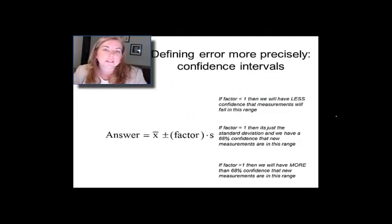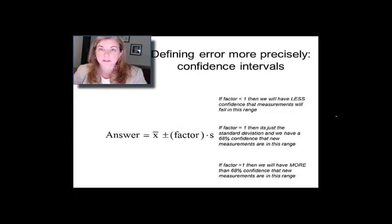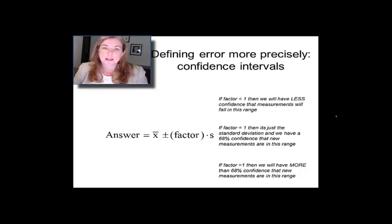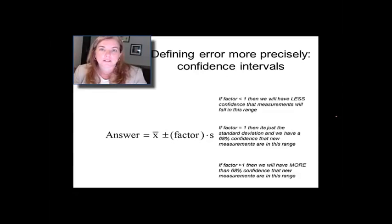Basically, what we're going to do in a confidence limit is we're going to start with a standard deviation — we're going to assume that you did a series of replicate measurements. That's the zeroth-order thing you have to do to characterize random error. But what we're going to do is multiply that by a factor, and that factor is going to reflect something about our confidence limit. Before I talk to you about where the factor comes from, let's just reason through how to think about it.